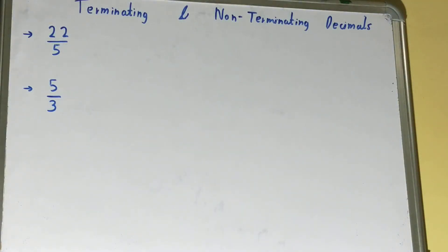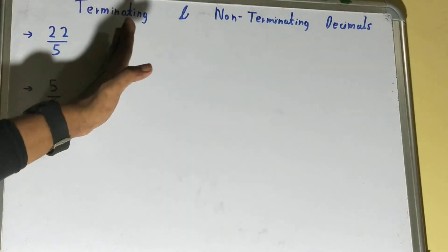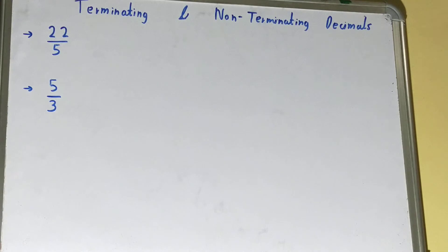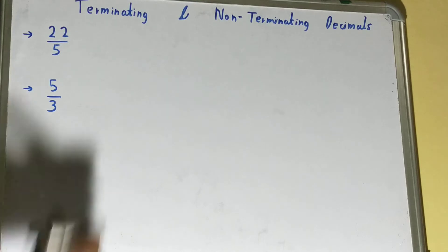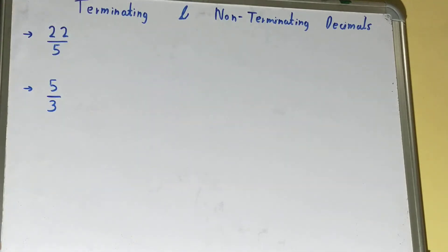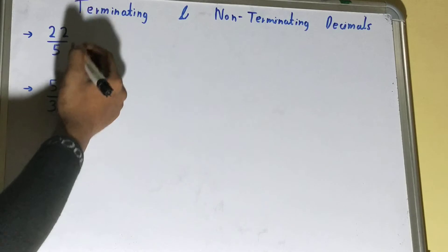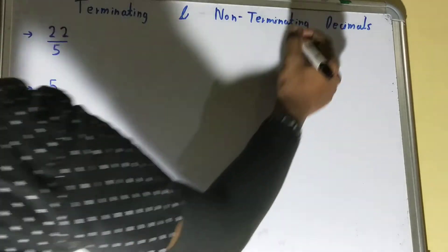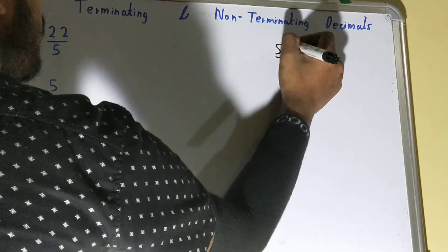Hello friends! In this video I'll be helping with terminating and non-terminating decimals. Here I have two different problems, and with these we'll be trying to understand the concept of terminating and non-terminating decimals. Let's start with the first one: 22 divided by 5. Let's try to find the decimal value of it.